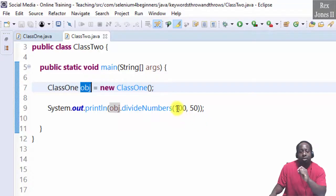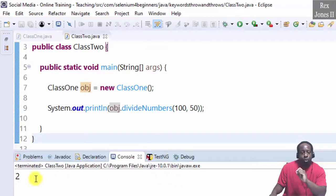In Class Two, I created an object called obj. Obj calls the divideNumbers method in Class One, then passes 100 and 50. When I execute, we see 2 is returned to the console.